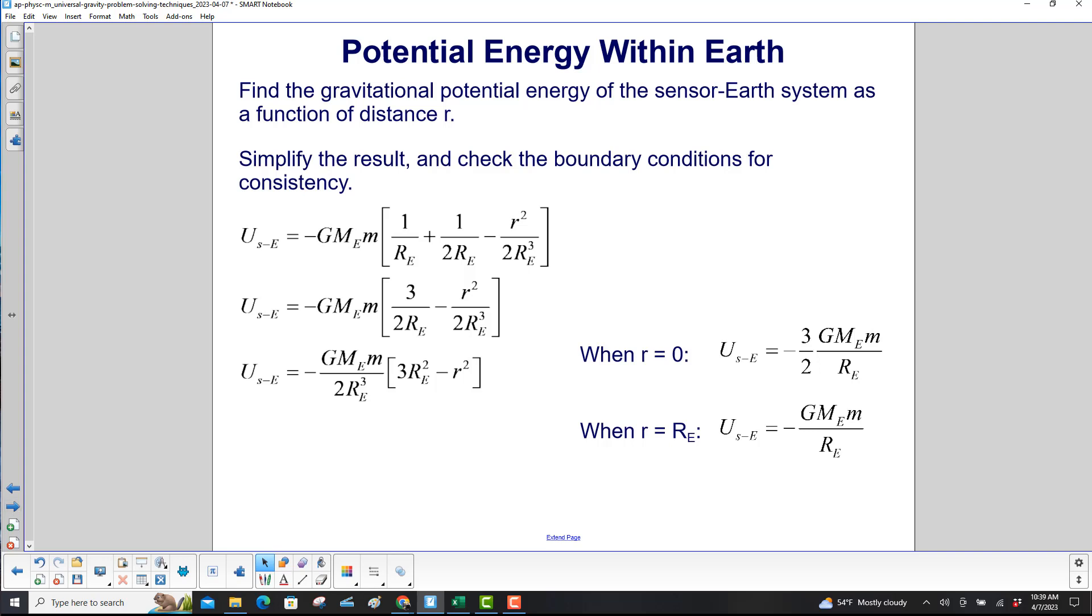So first, we'll simplify the result and then check the boundary conditions, which doesn't prove that we have a correct answer, but it would show you if we got it wrong, if the units didn't check out, for example. We're combining these two terms and factoring out 2 over R_e cubed. And here's our final answer.